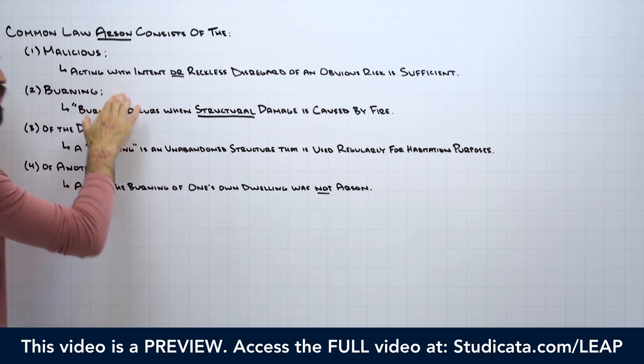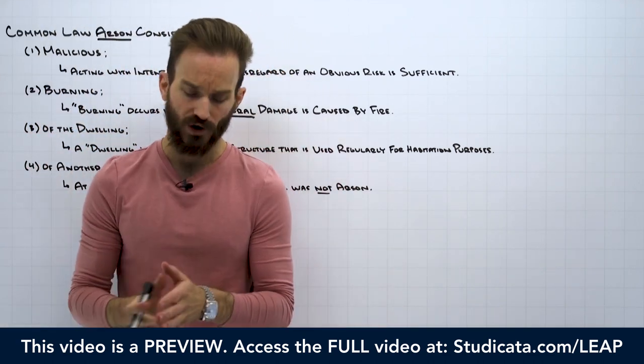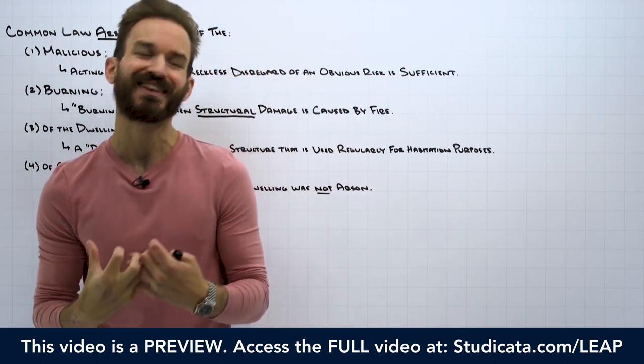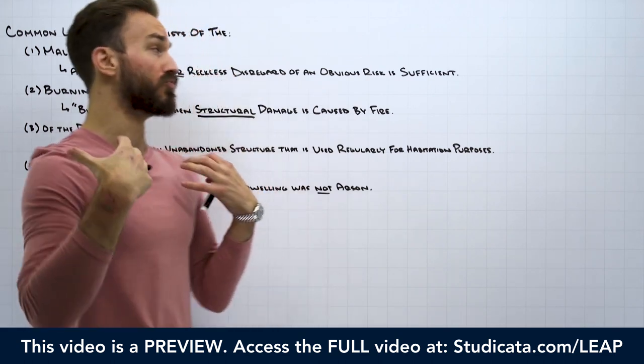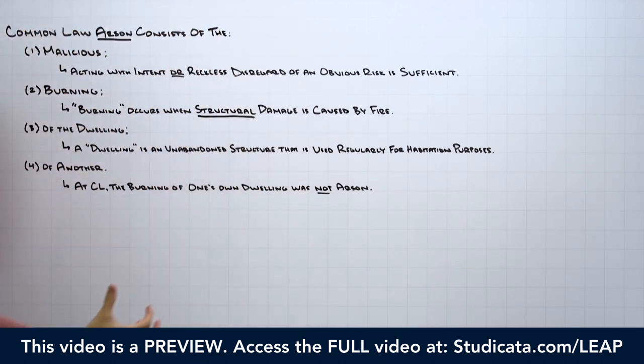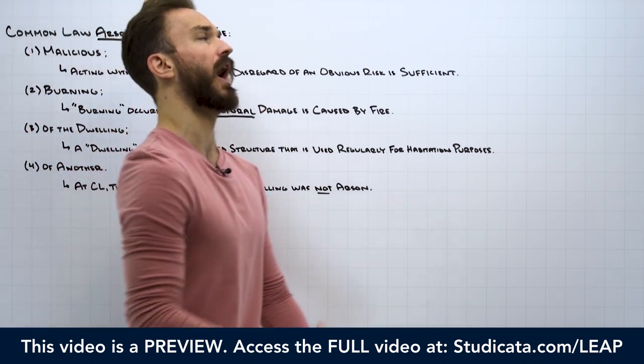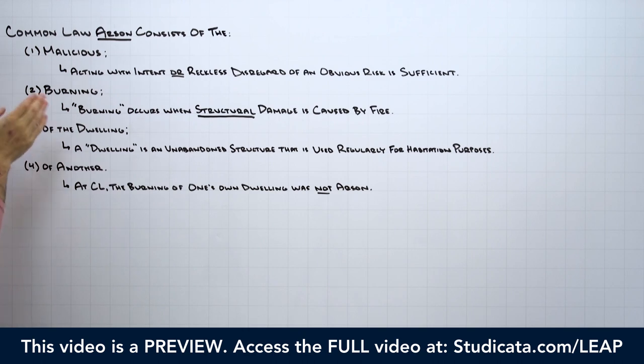The main idea here is it's important to recognize with common law arson, you can be liable - a defendant can be liable for common law arson even if they did not intentionally set the fire. If their reckless conduct resulted in starting the fire, as long as it's reckless disregard of an obvious risk, can satisfy our first element. Number two, we need a malicious burning.